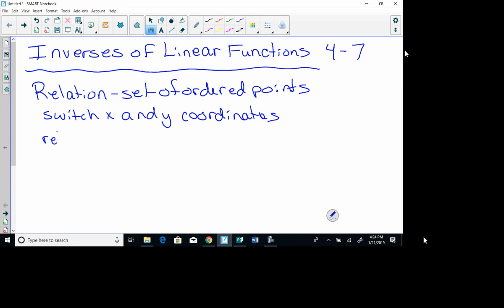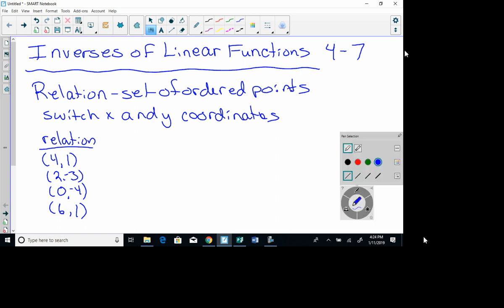And if we want the inverse of a relation, what we do is we just switch the x and y coordinates. So, for instance, here's a relation. I'm going to give you a relation. It's the points (4, 1), (2, -3), (0, -4), and (6, 1). I could graph those points if I wanted to. I'm not going to do that right now. We've done a ton of graphing and we really don't need to spend a whole lot more time on that.